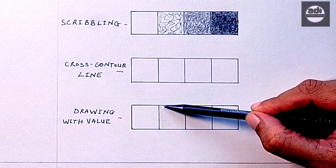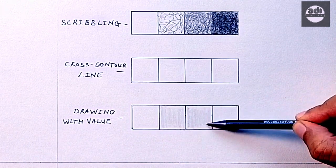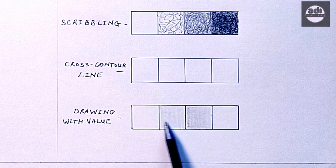Drawing with value is a technique in which you can use the side of your pencil or a brush to lay down graphite or charcoal.